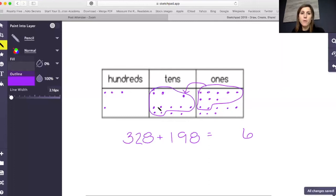One, two, three, four, five, six, seven, eight, nine, 10. Great. So I can group those 10 tens together and make them 100.